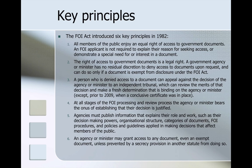The Freedom of Information Act introduced in 1982 contains six key principles. First, all members of the public enjoy an equal right of access to government documents — an FOI applicant is not required to explain their reason for seeking access or demonstrate a special need. Second, the right of access to government documents is a legal right; an agency or minister has no residual discretion to deny documents upon request and can only do so if a document is exempt under the Act. Third, a person who is denied access can appeal against the decision to an independent tribunal, which can review the merits of that decision and make a fresh determination that is binding on the agency or minister.